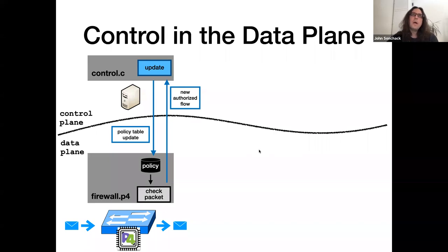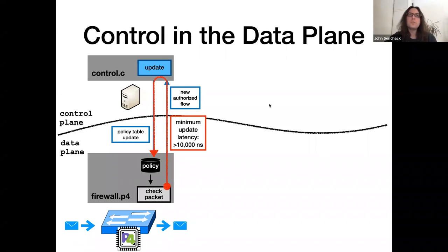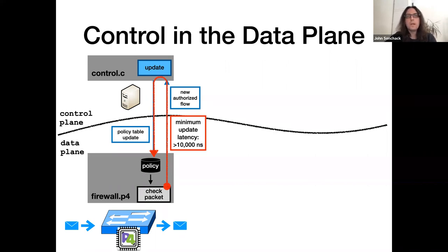The problem with this model is performance. This control loop is slow because there's a lot of unavoidable communication overhead. Even if you write an update process that's really fast, the data plane is still going to wait a long time between when it requests the policy update and when that actually happens.